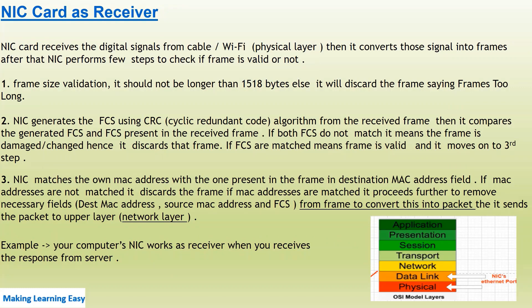Now let's see how the NIC card works as a receiver — that is, when it is receiving data or a signal from the network or any network device. The NIC card receives the digital signal from the cable or Wi-Fi at the Physical Layer, then converts those signals into frames. You can see the OSI model screenshot at the bottom showing the Physical Layer interacting with the Data Link Layer where the NIC card is present.